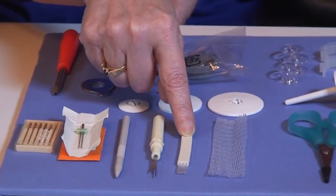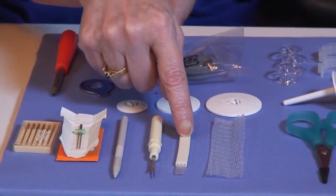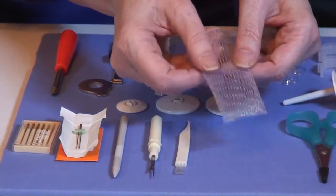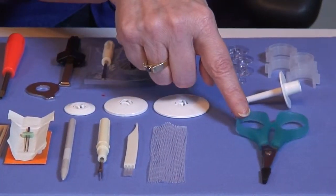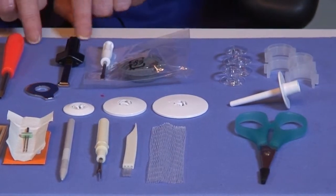We have a little tool for cleaning out the machine. It's very important. A thread net to go over slippery threads to keep them from coming off too quickly. A pair of scissors and some tools back here.